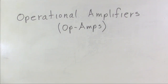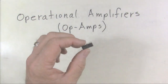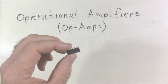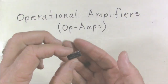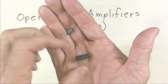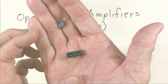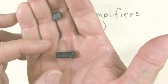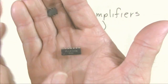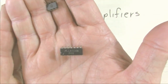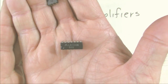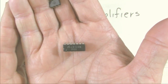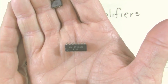An operational amplifier is an integrated circuit. I have a couple of packages here. Let's see if we can take a look at this. We might be able to see it — let's flip that over. We can actually see the numbers on there. This is an LM324 Motorola circuit.